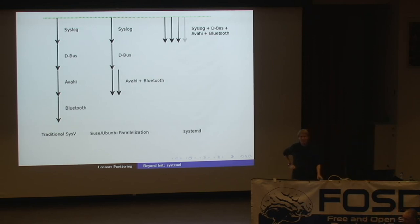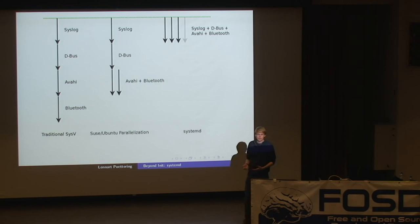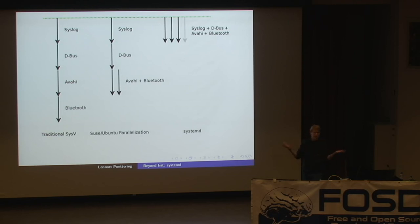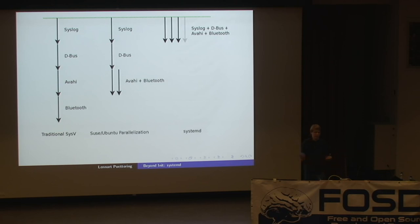Question: how do you know which sockets have to be created in the first place? Basically, if somebody wants a service to be started — like if you install a syslog implementation — it will tell us not only which binary should be started eventually, but it will also tell us to please create the /dev/log socket. At installation time, you drop in a service file and a socket file — that's what we call it in systemd — that contains configuration parameters. Usually that's very, very short: you just say 'listen on a datagram socket /dev/log' — full stop. That's really, really short.